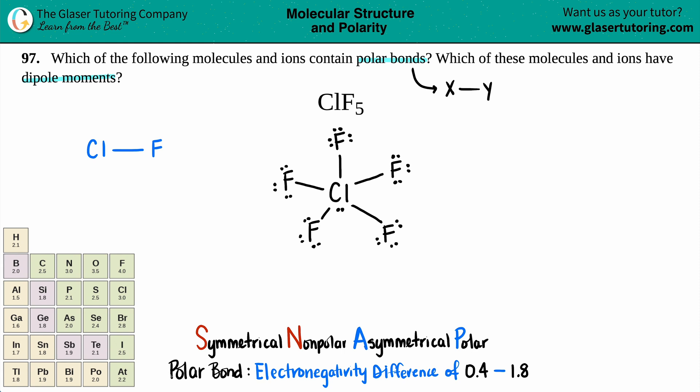If you are a polar bond, your electronegativity difference, and remember, this difference is just a fancy way for saying subtraction. So if you subtract your two electronegativities, you should be in the range between 0.4 and 1.8. So that's why I have this little chart over here. We're just going to make sure chlorine's electronegativity is right here. It's a 3.0, and fluorine is a 4.0.